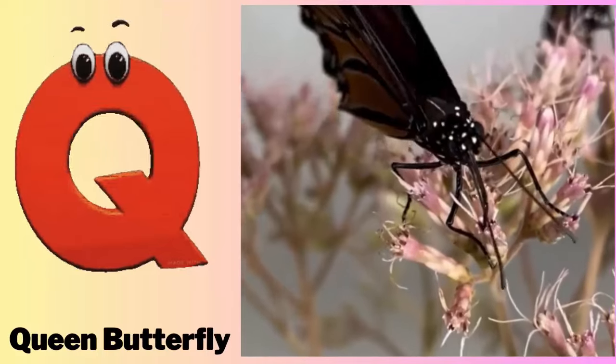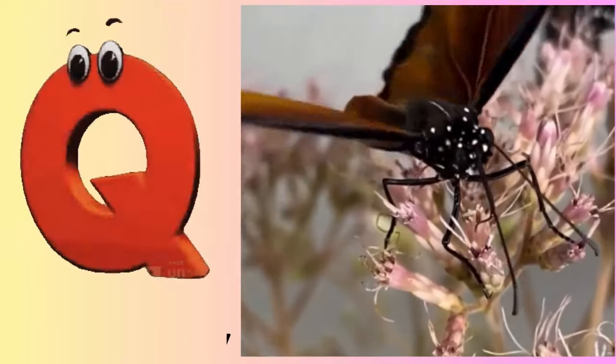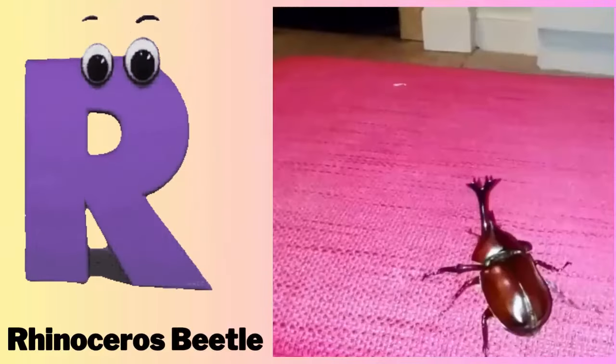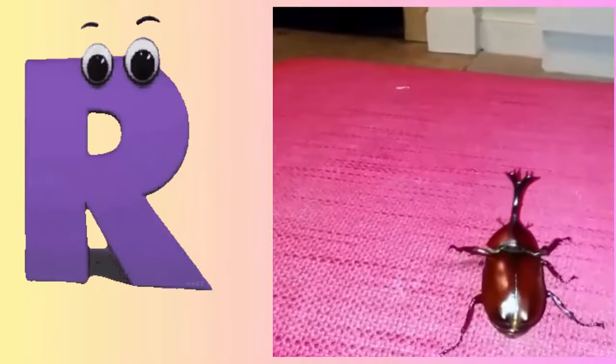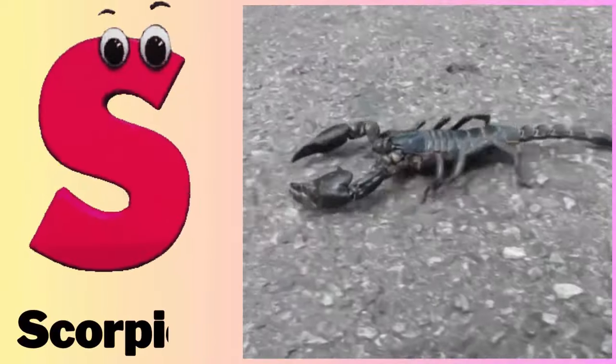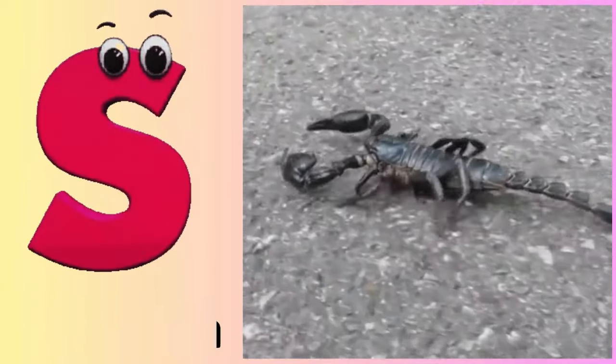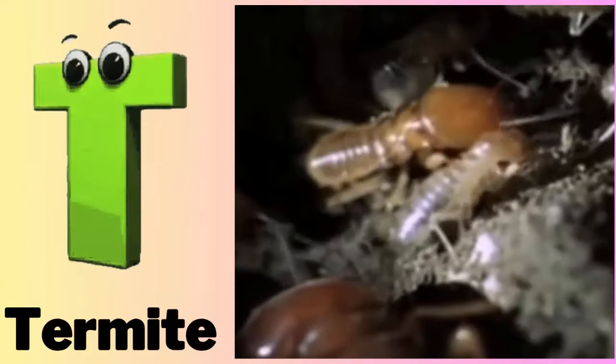Q - Q for queen butterfly. R - R for rhinoceros beetle. S - S for scorpion. T - T for termite.